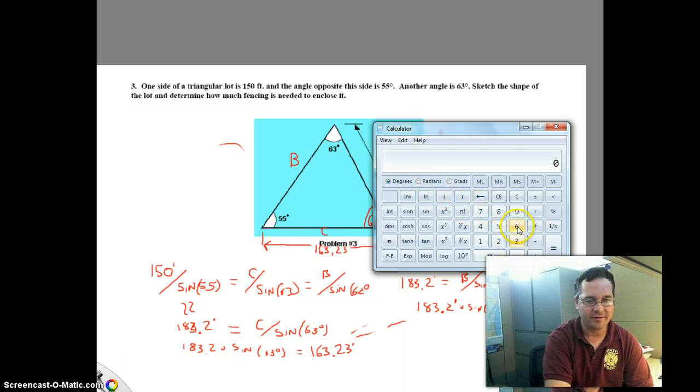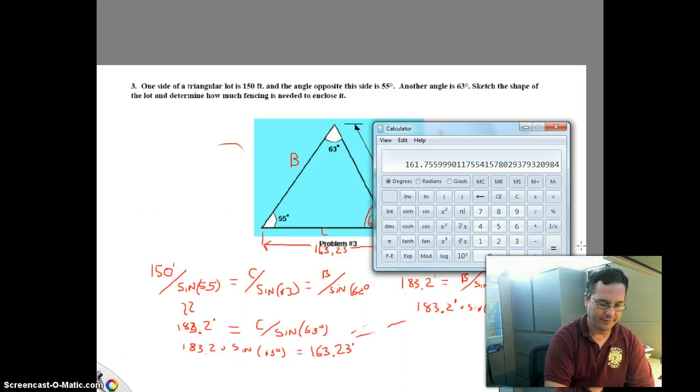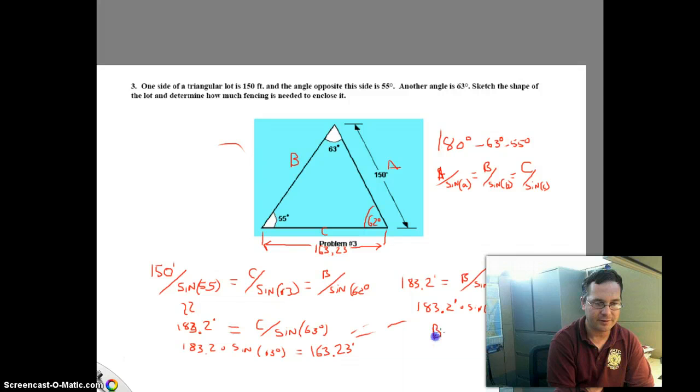The process is we're going to take the sine of the angle, so 62 degrees, put it into the sine function, and we're going to multiply it by our constant of 183.2 feet. And we find that the length of side B is about 161.76 feet. So B equals 161.76 feet.